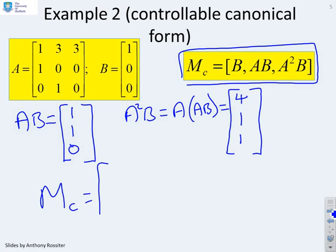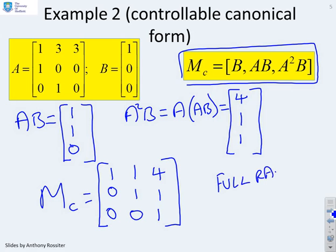So now, I can work out MC. So MC is going to be given as B, which is 1, 0, 0, AB, which is 1, 1, 0, and A squared B, which is 4, 1, 1. And again, this is clearly full rank. You can see that because it's got this upper triangular structure and it's got ones on the diagonal. So therefore, this system is fully controllable as expected.